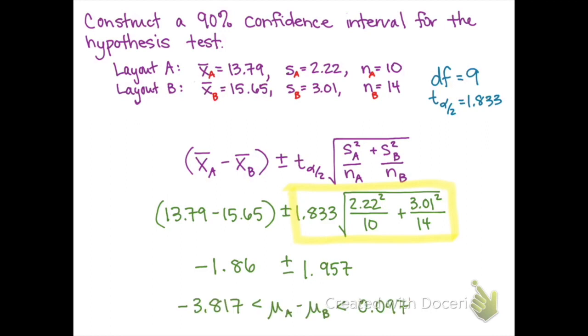So we are 90% confident that the true difference in means between layout A and layout B is between negative 3.817 and 0.097, and these would be in dollars, so that means that we're saying that the difference between the two layouts could cause the impulse spending to be lower by $3.817 or up to $0.097 more.